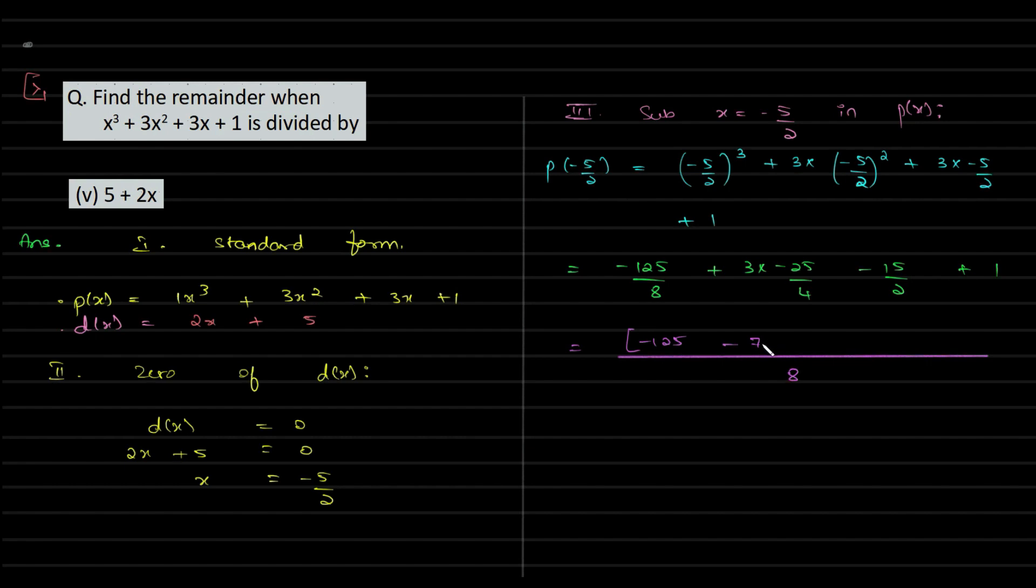So this will be -125 + 150 - 60 + 8 = -27/8, and this is your answer. Let's verify this.